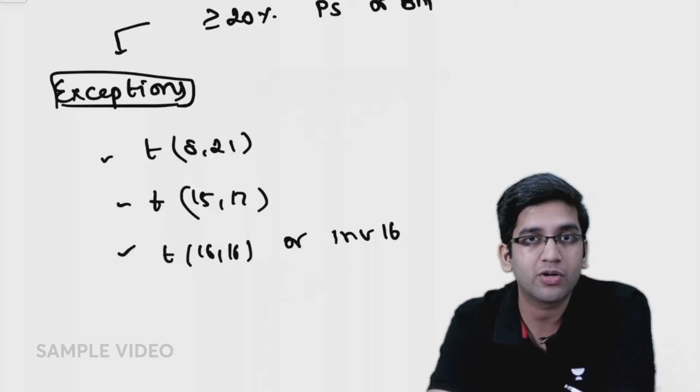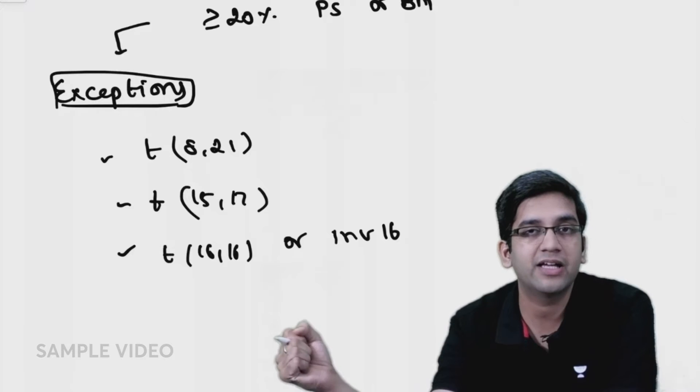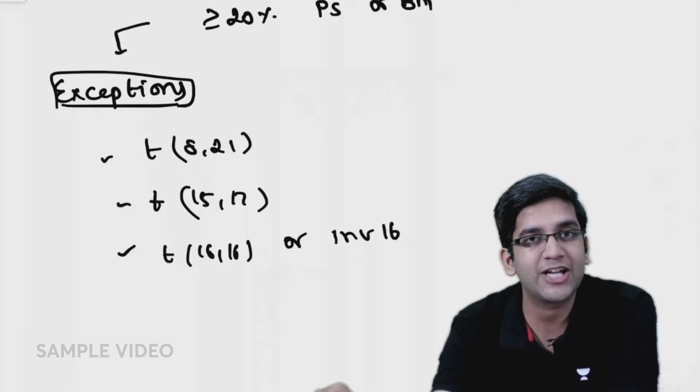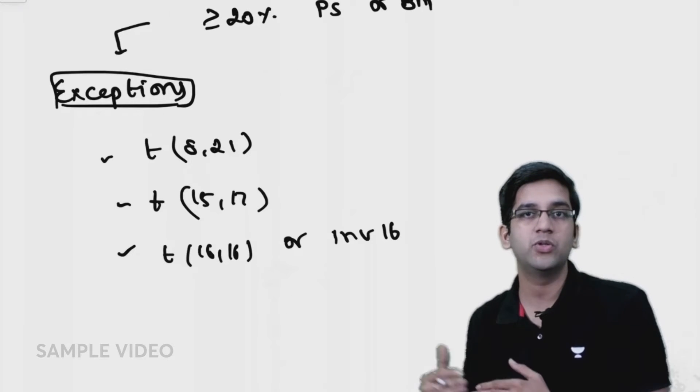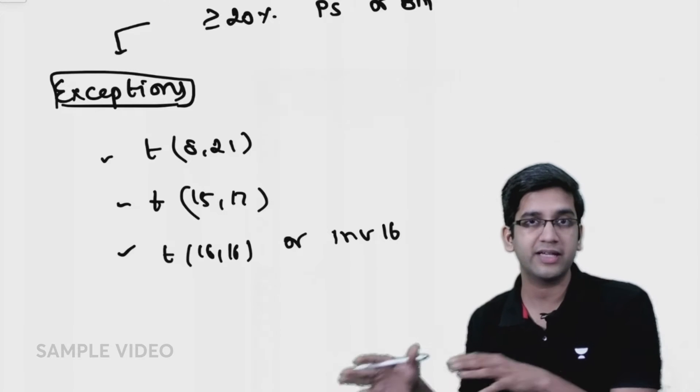Exceptions are always important because they help us gauge MCQs. When a hundred people are reading, everyone knows the normal thing, so if some exception comes they catch hold of the exceptions and that's where they ask questions.